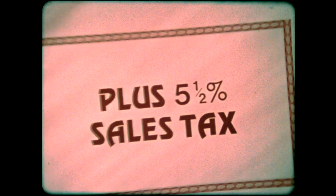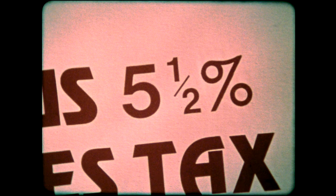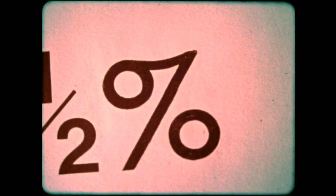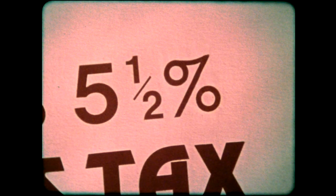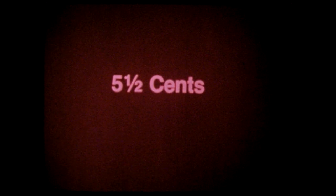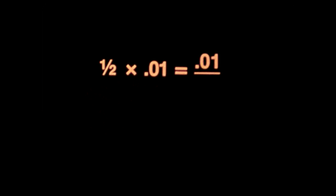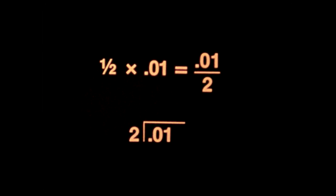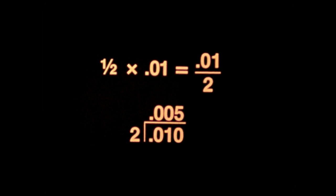But wait a minute — we forgot the tax. A five and one-half percent sales tax. The percent sign means per hundred. So our tax will be five and one-half cents on every hundred cents, for each dollar of our purchase. Can you write five and one-half cents as a decimal? We know five cents is written as five hundredths. To find one-half of one hundredth, we divide one hundredth by two, and we find it's five thousandths. So five and one-half cents would be written as fifty-five thousandths.